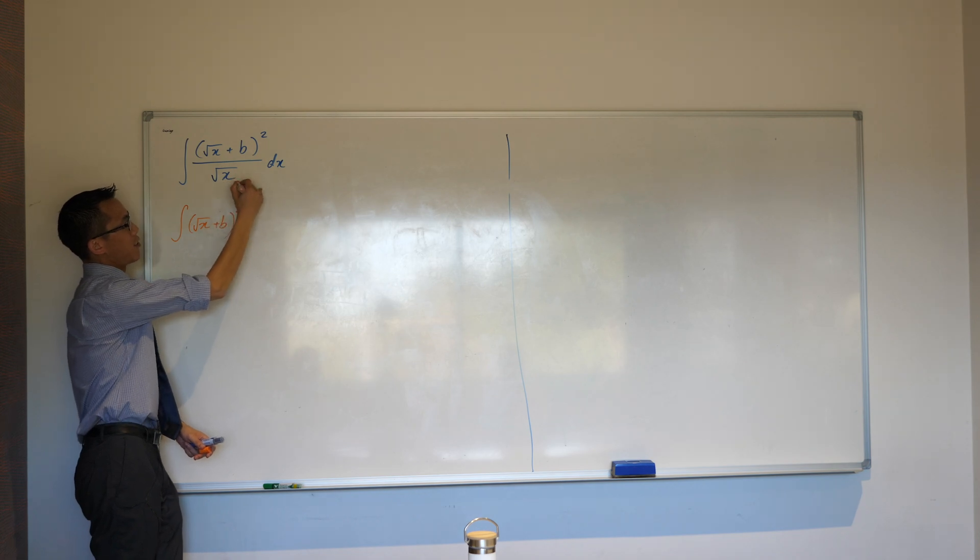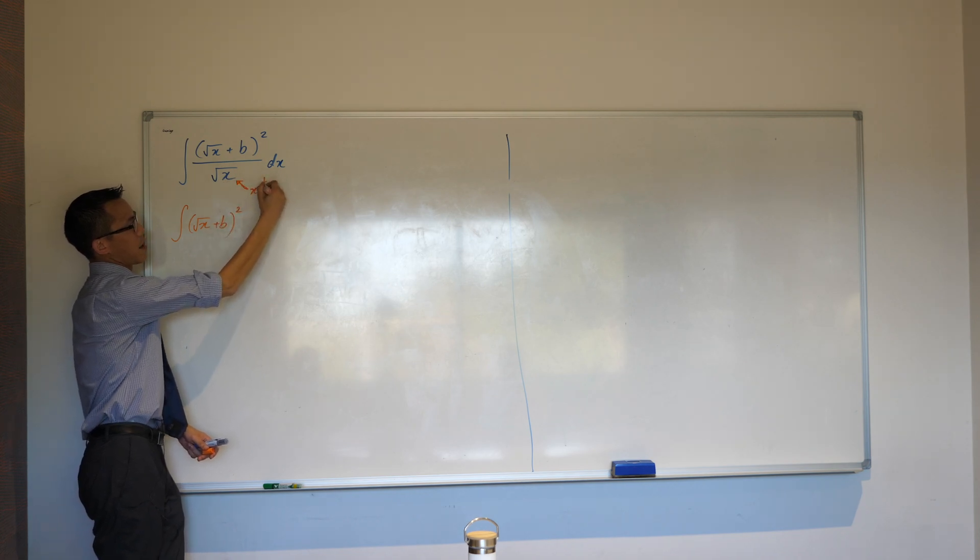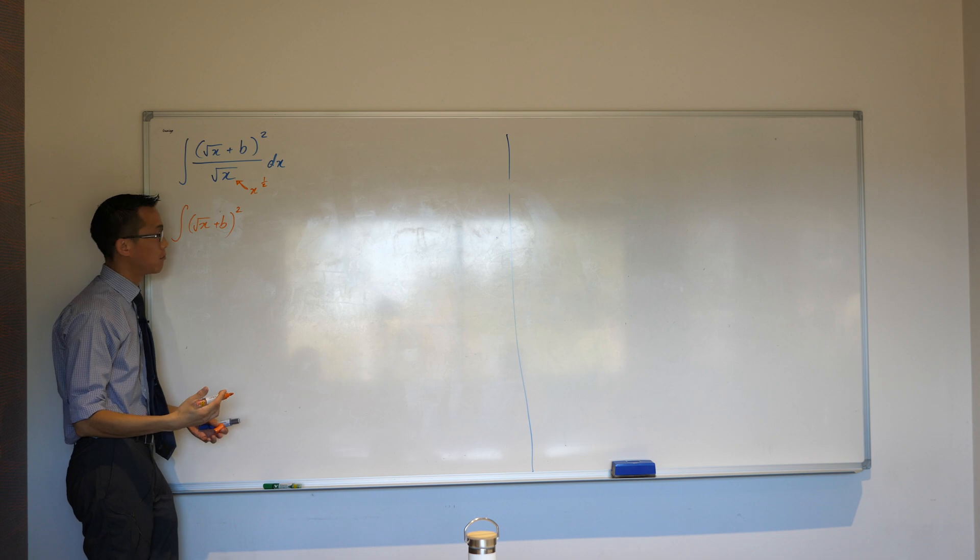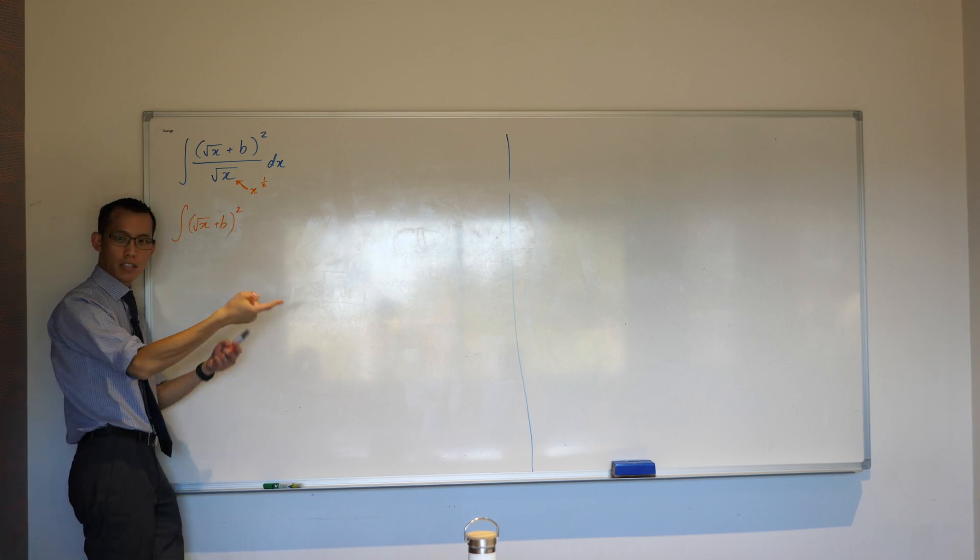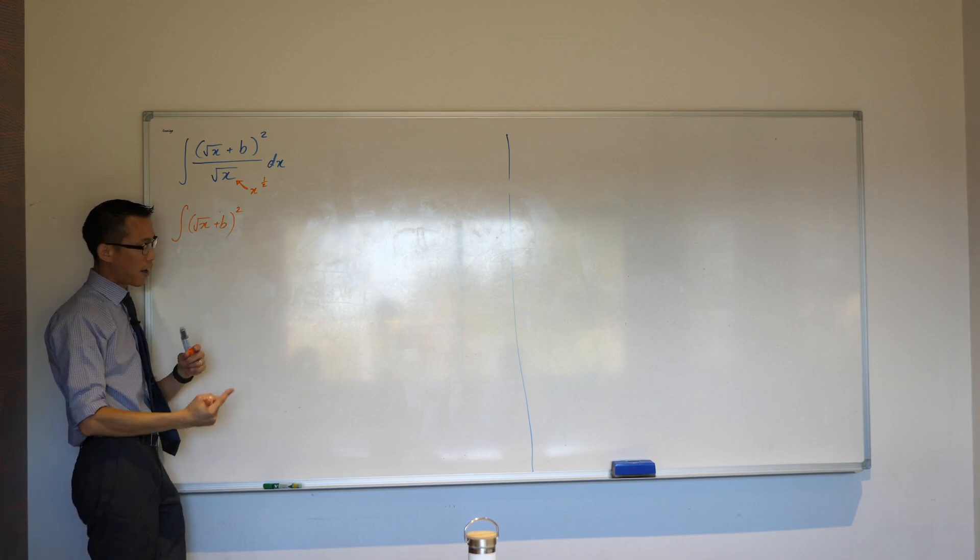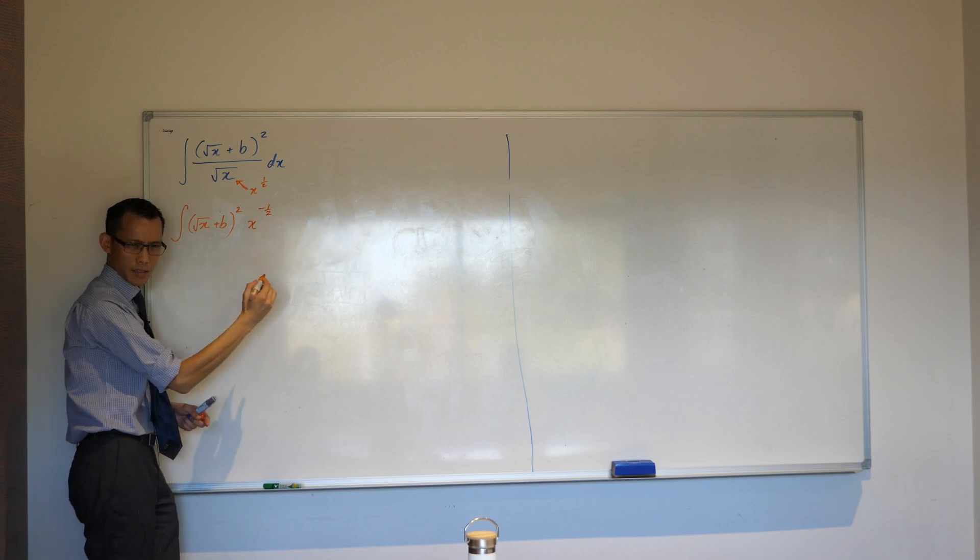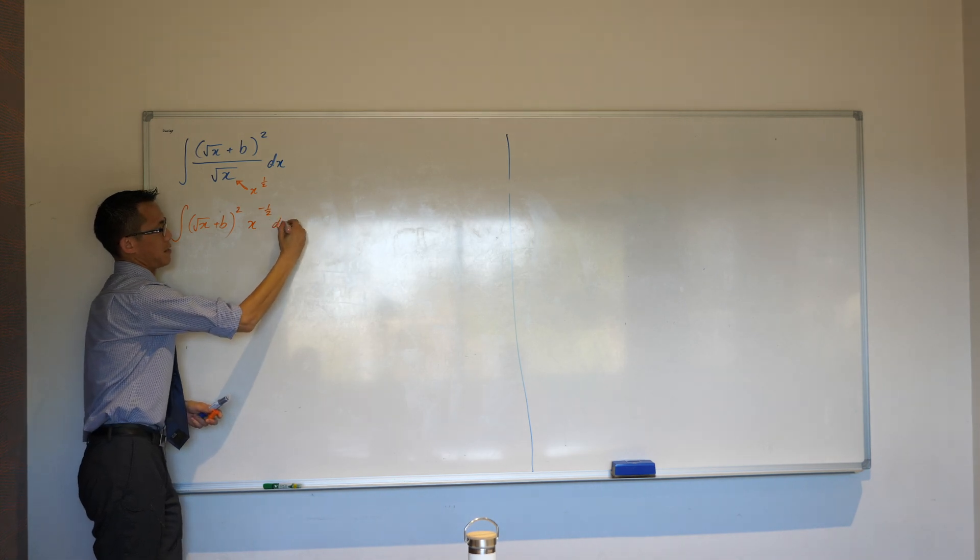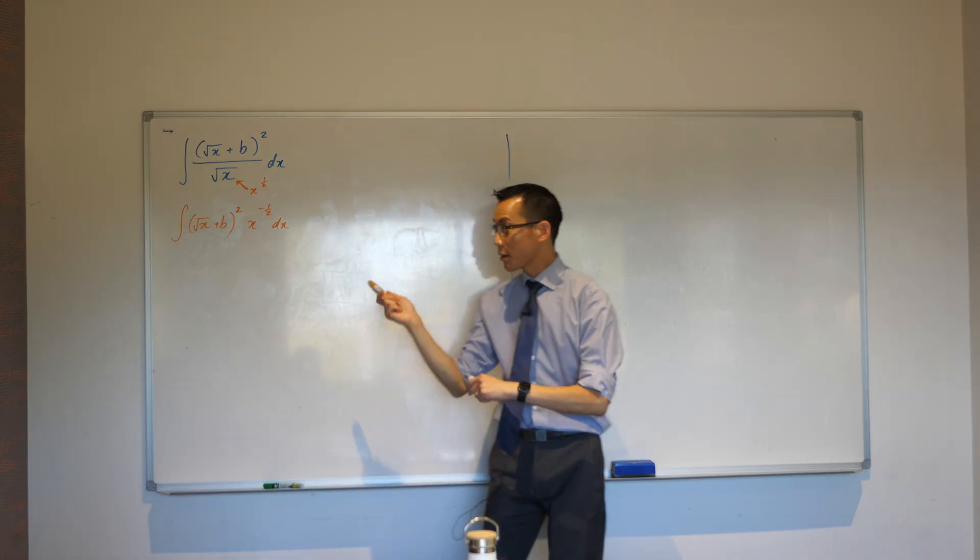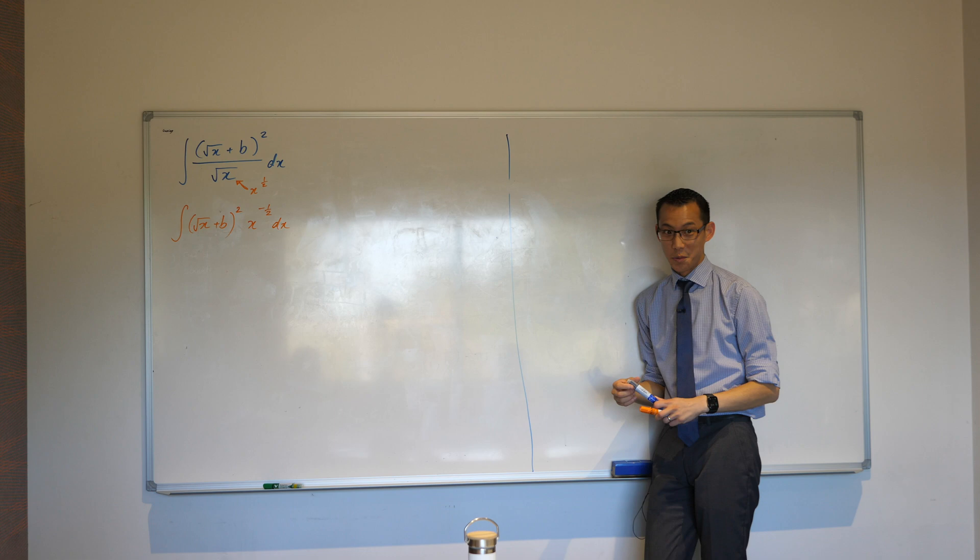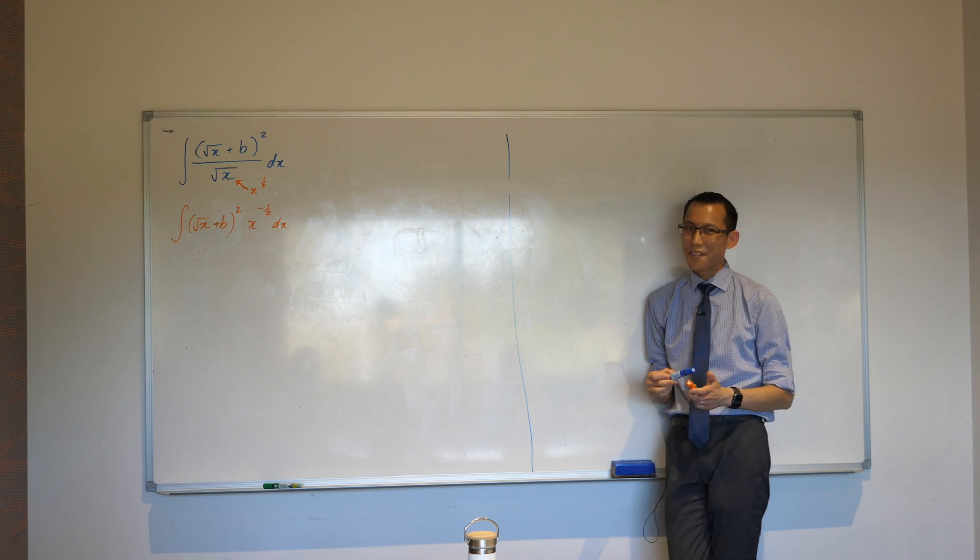so actually you did two things at the same time. So, number one, you said, hey, I know that that is actually x to the power of half, written in index form, right? And in addition to that, it's on the denominator. So, if I write it on the numerator, that's why it becomes a negative index. Yes? Okay, and then there's a dx there. Now, I'm going to suggest this is actually a good thing to do. No, we are just not finished yet.